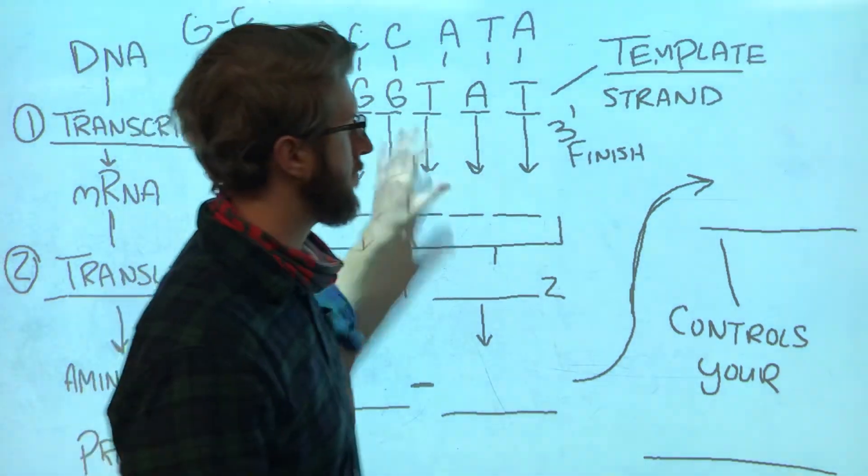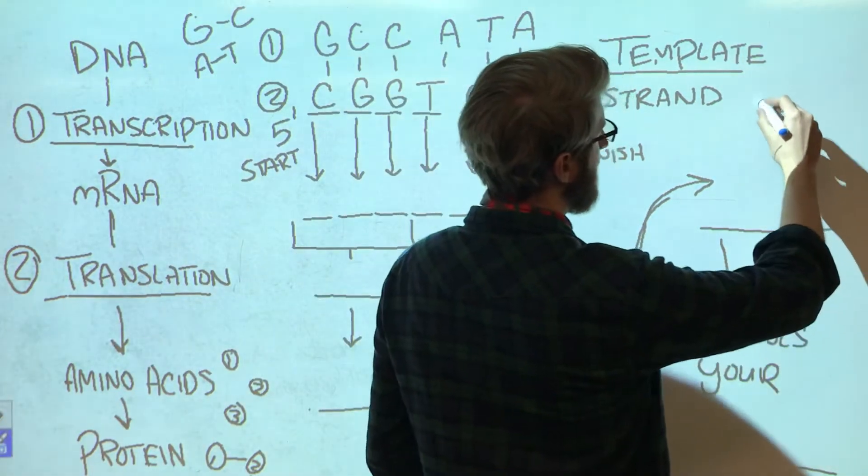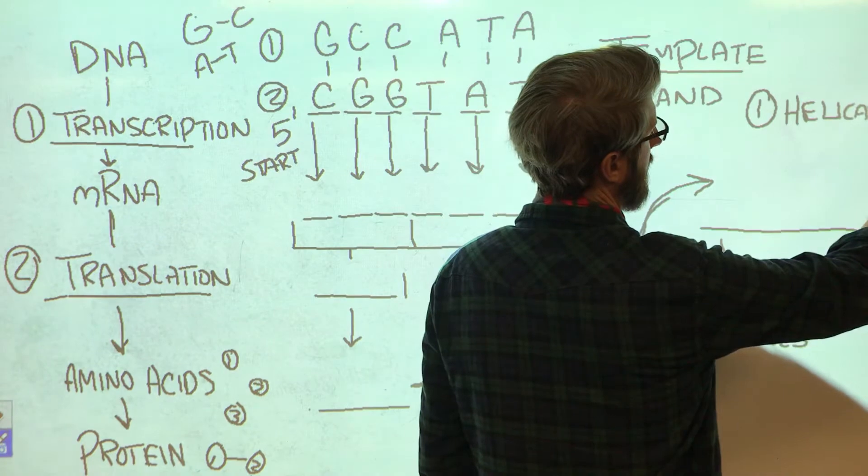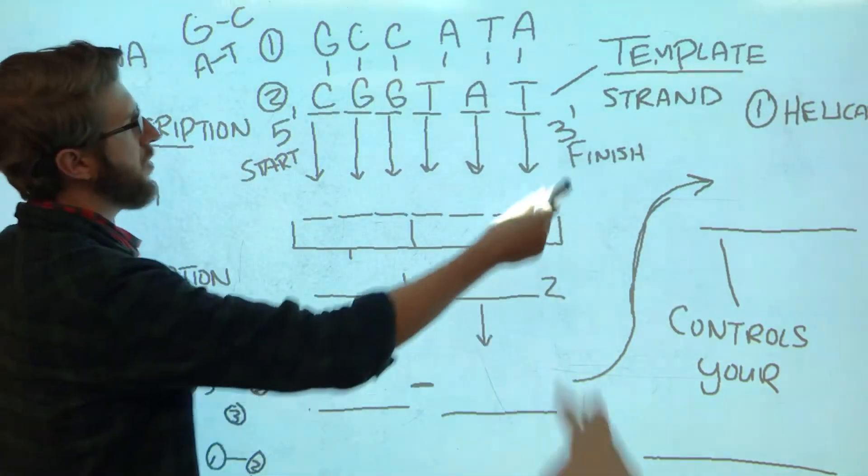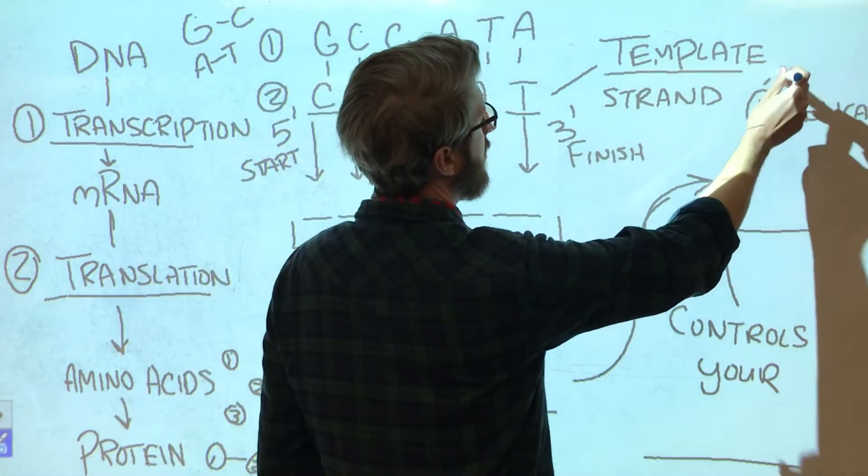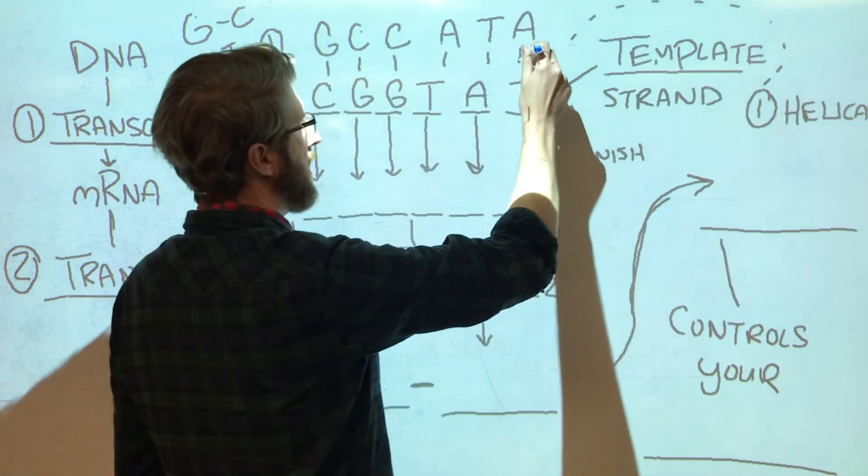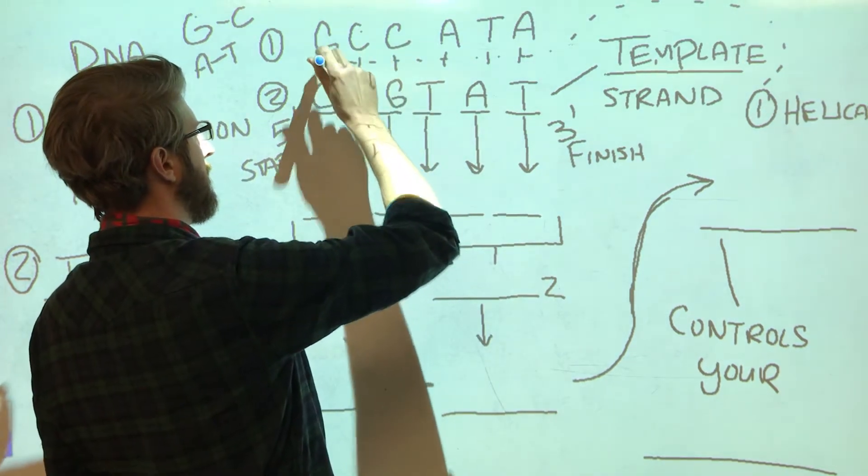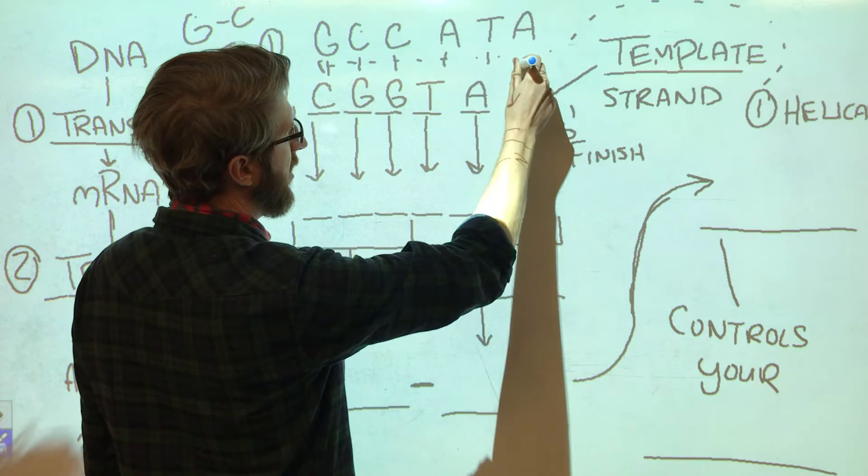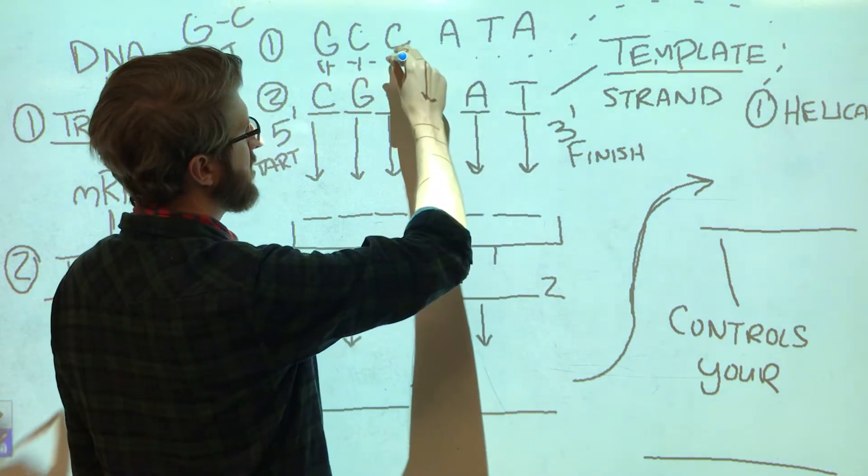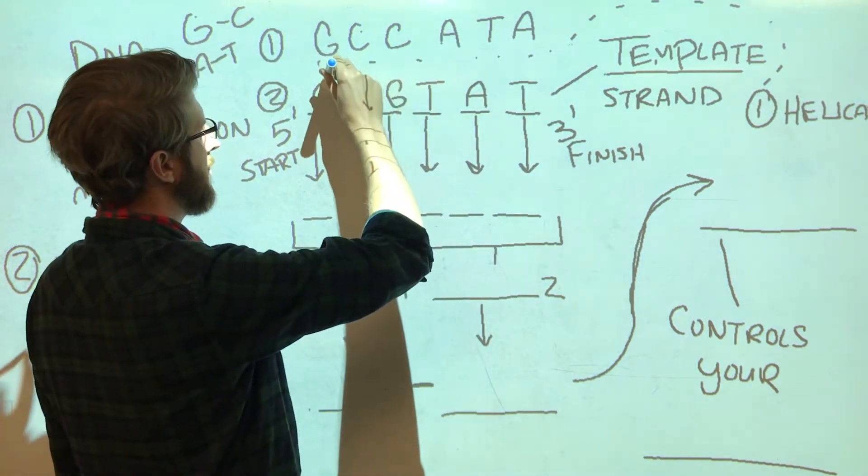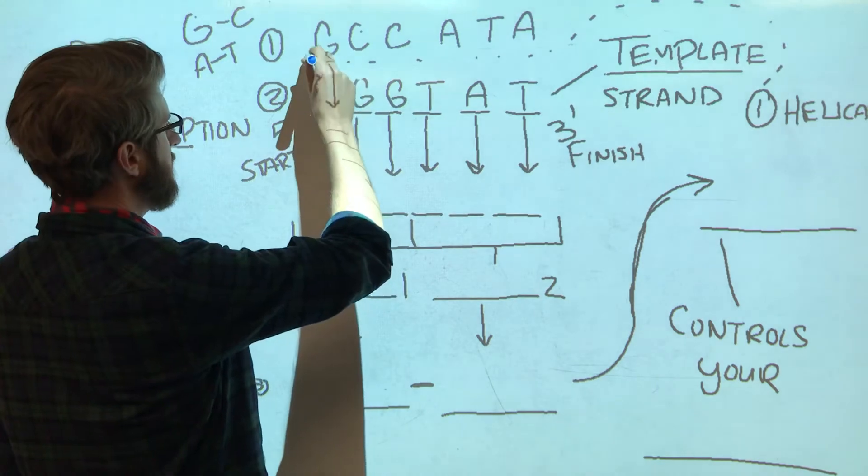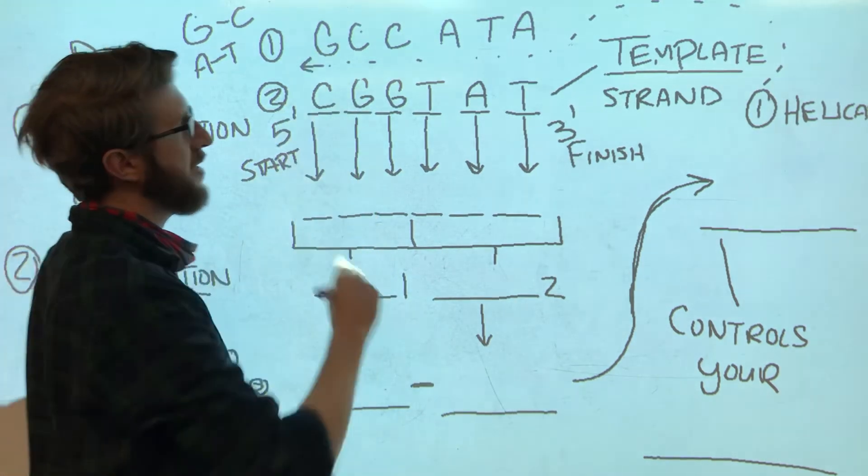The first enzyme is called helicase. Helicase is going to come along and it's going to go right down the middle of these guys, and it's going to separate every letter from its friend on the other side, or every base from its friend on the other side.